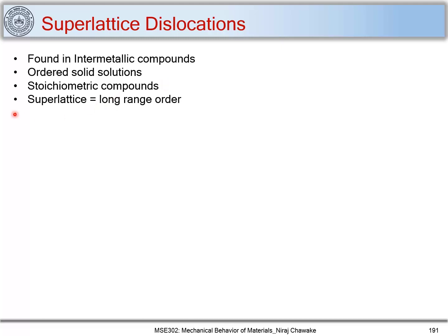When I talk about super lattice, what do I exactly mean? I am talking about a long range order. There are two types of order: short range order and long range order. When I talk about super lattice or ordered solid solution, I am always talking about a long range order.